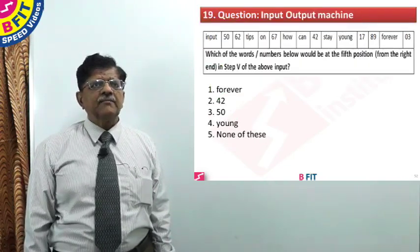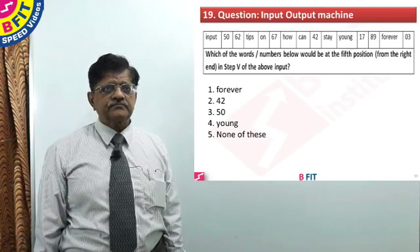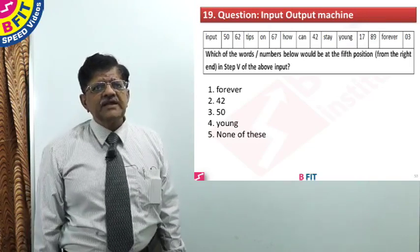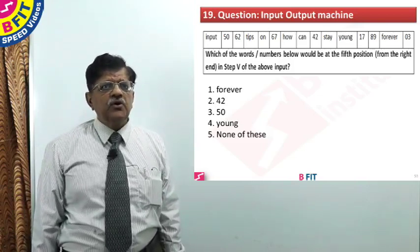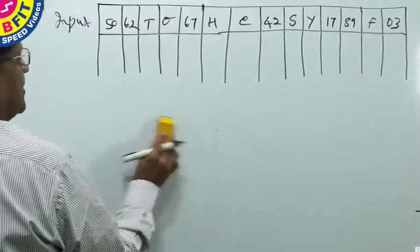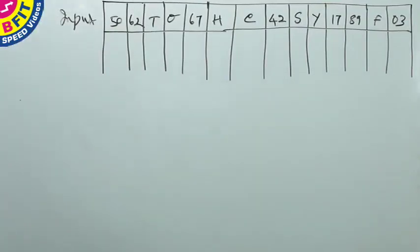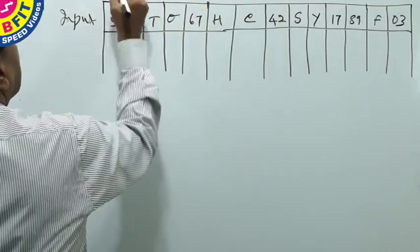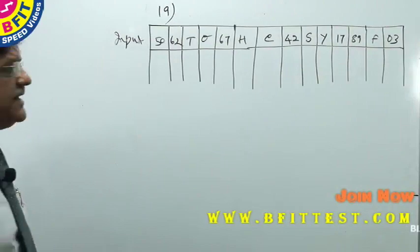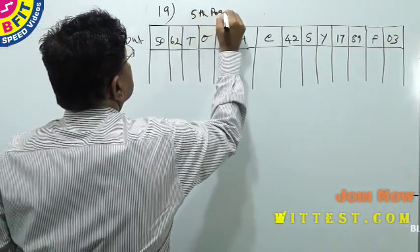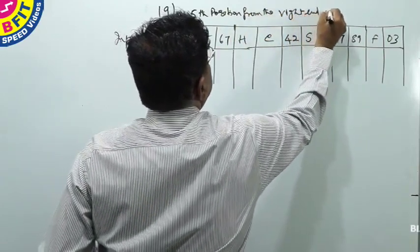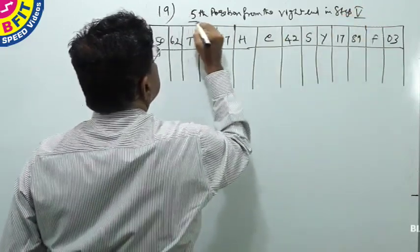Now let us go to the next question, question number 19, which is again based on the same input. The same input is given but the question is different: which of the words or numbers below would be the fifth position from the right end in step five of the input?